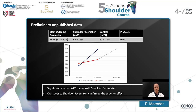I will share with you preliminary unpublished data of this randomized controlled trial. What we can see is that the shoulder pacemaker leads to a significantly better WOSI score, which is the main outcome measurement. And if patients did not do well with physiotherapy and opted to cross over into the shoulder pacemaker treatment arm, these patients still showed the same nice effect of the shoulder pacemaker that their peers had who started primarily with the shoulder pacemaker treatment.